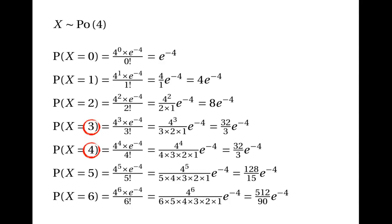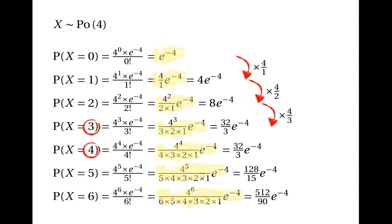There's a pattern here, and if we look at the pattern, we can work out a method for saying really quickly what the mode is. Look at how the probabilities change going up the number of events. Going from 0 events to 1 event, we multiply by 4 over 1. Going from 1 event to 2 events, we multiply by 4 over 2. From 2 events to 3 events, we times by 4 over 3. From 3 events to 4 events, we times by 4 over 4. From 4 to 5, we times by 4 over 5. And from 5 to 6, we times by 4 over 6.